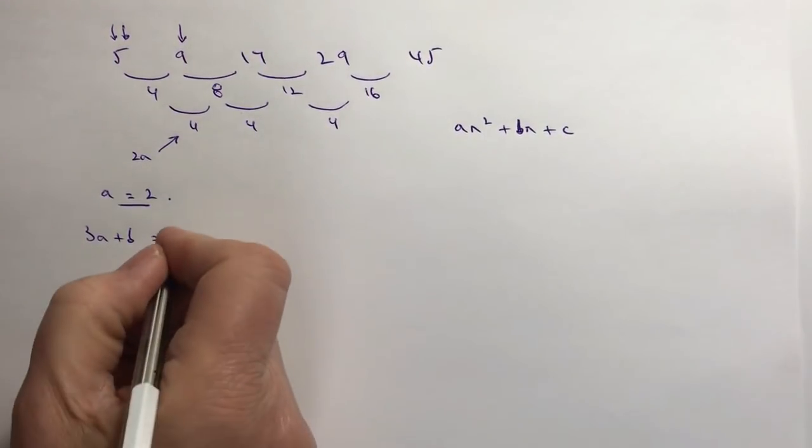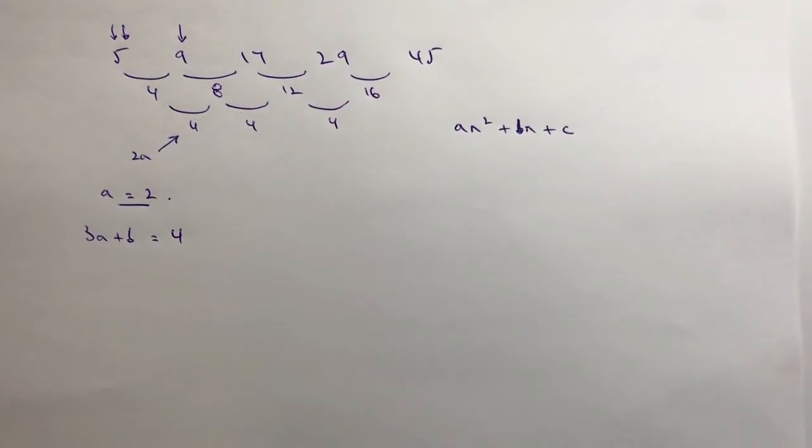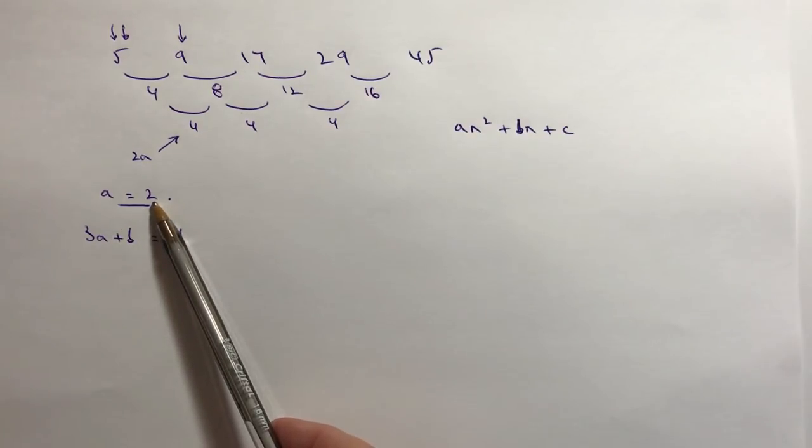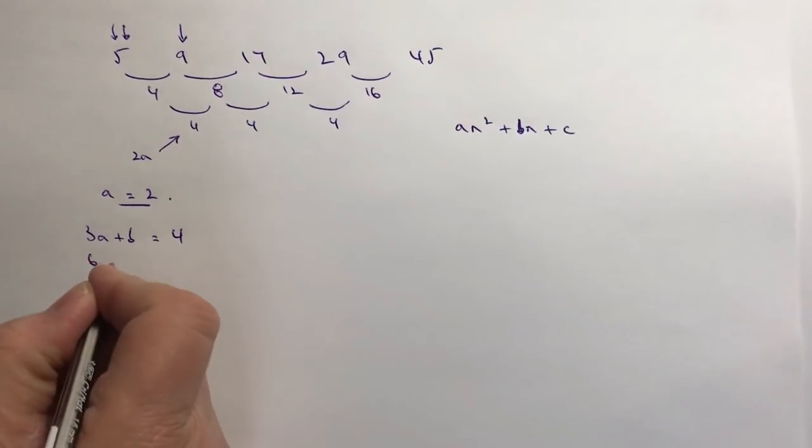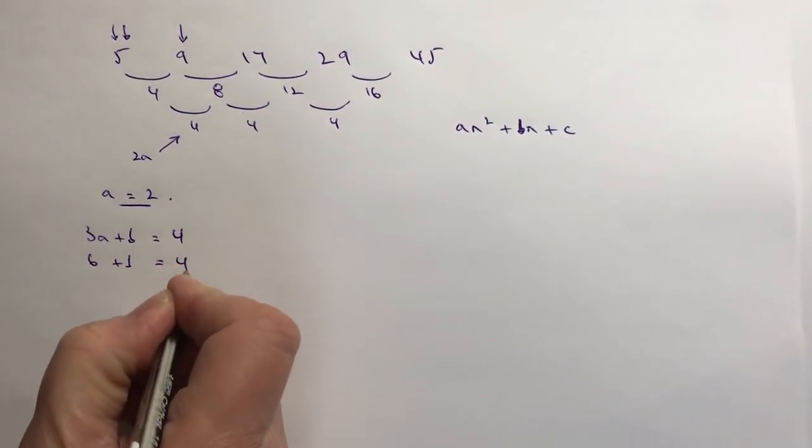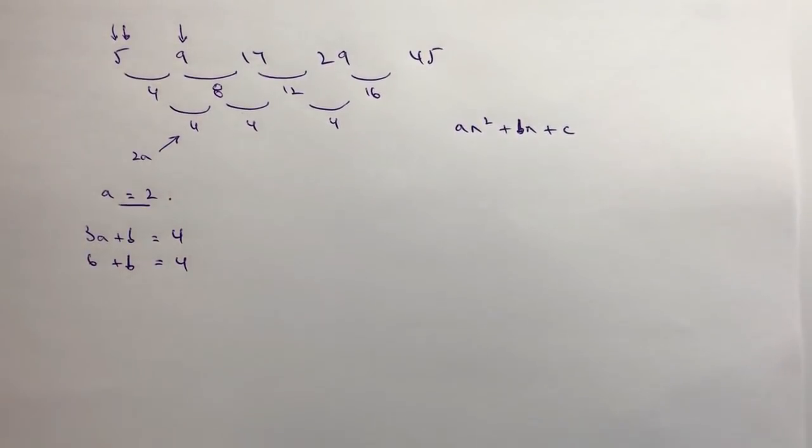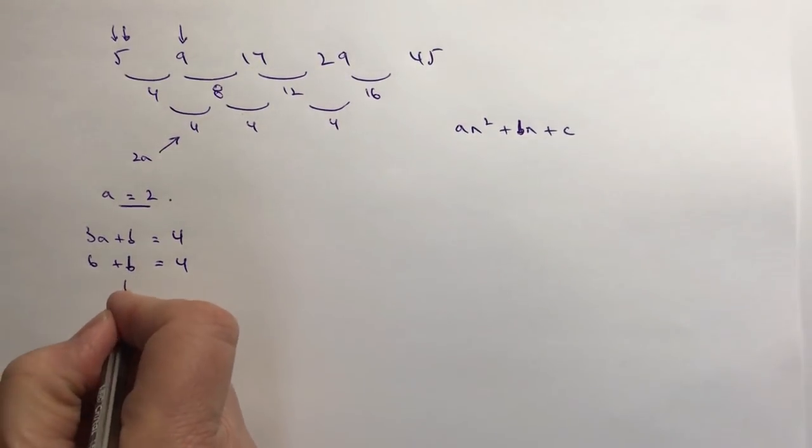3a + b equals the difference between the first two numbers, which in this case is 4. You need to remember that. Now if you remember that, you should be able to work through these in the same way every single time. So if I've got a value of a which is 2, I can just plug that straight into here and I'm going to get 6 + b = 4.